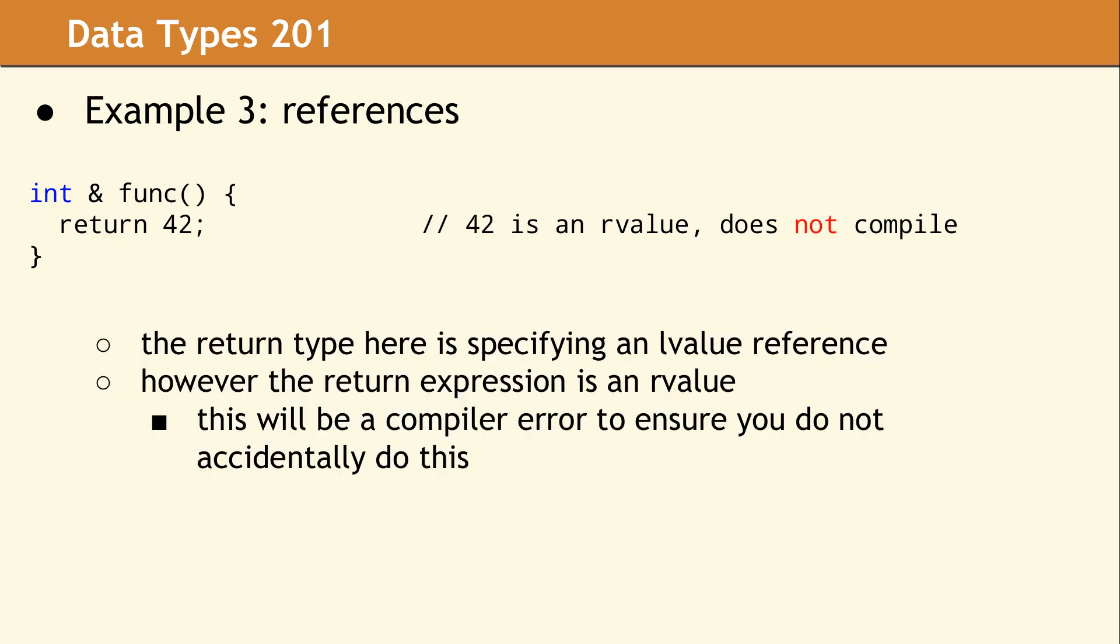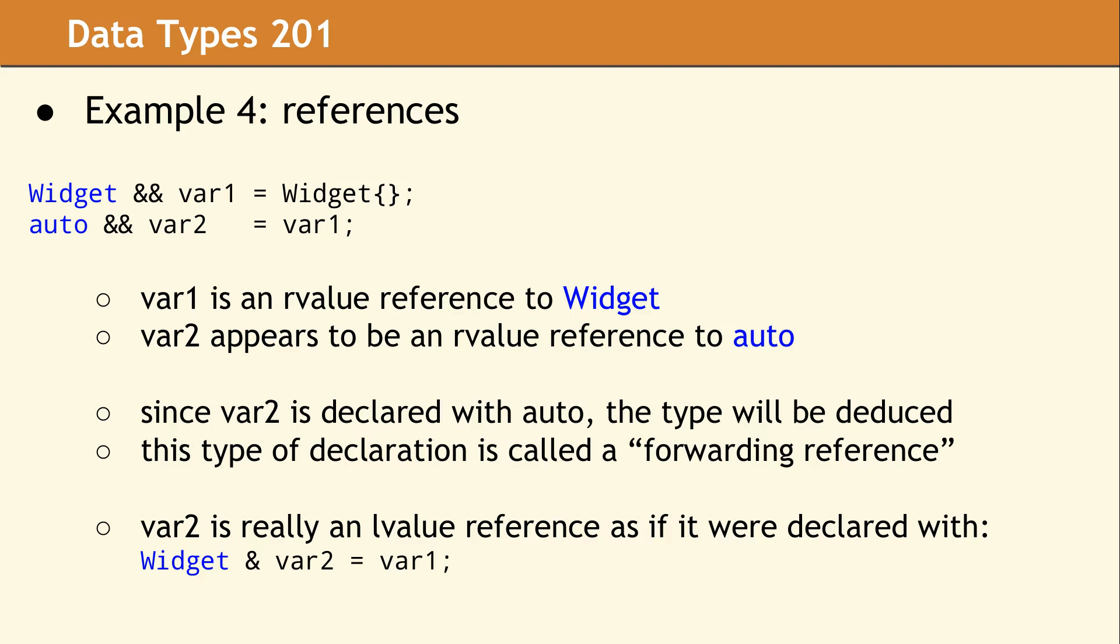If we change func to return an L value reference, this won't compile, because 42 is an R value, and an R value cannot bind to an L value reference.